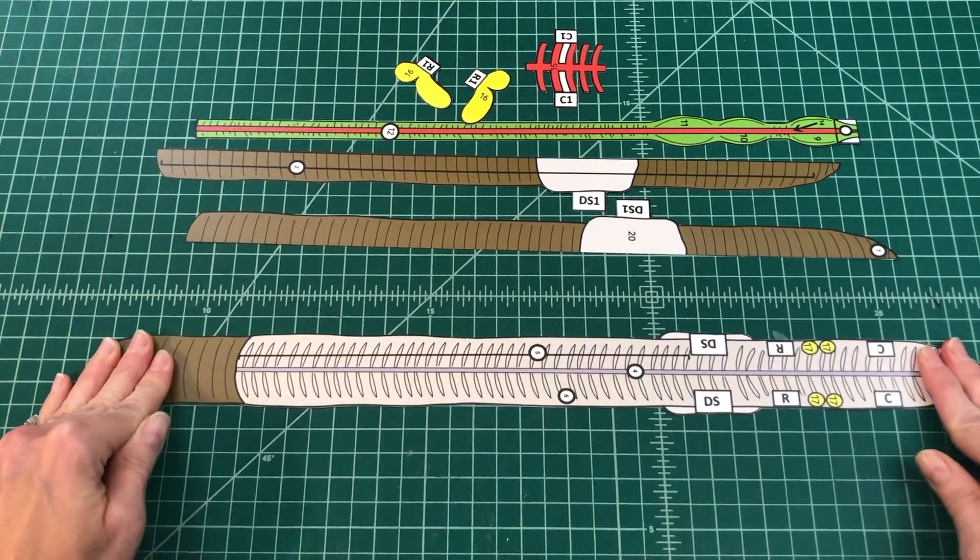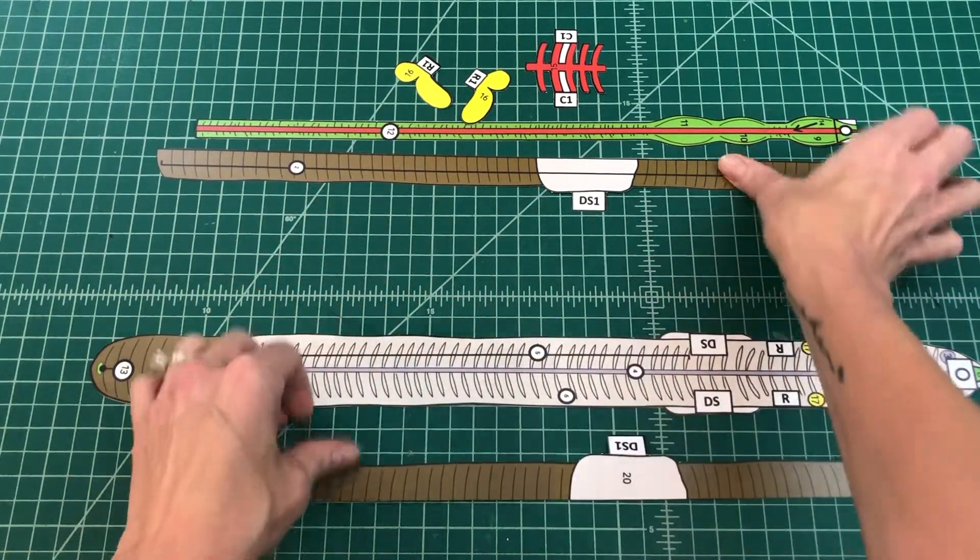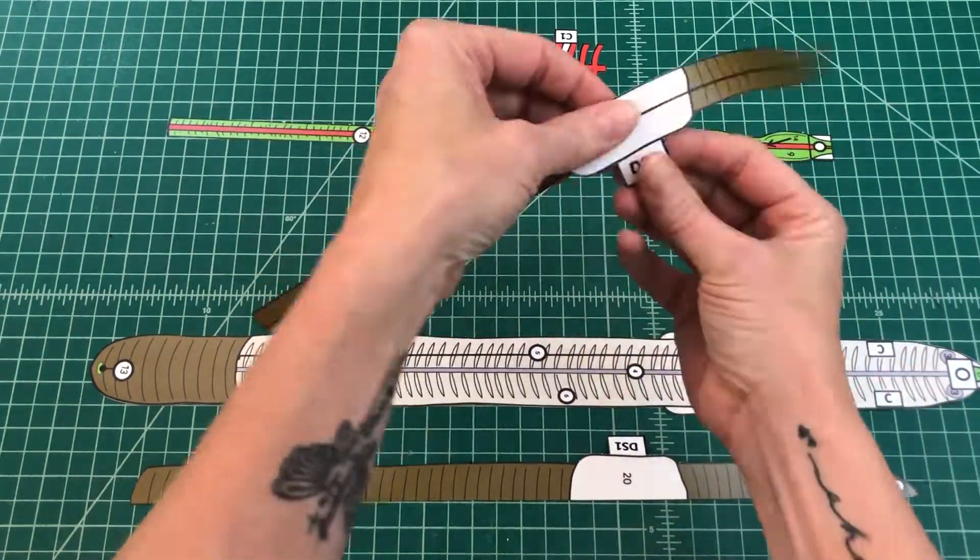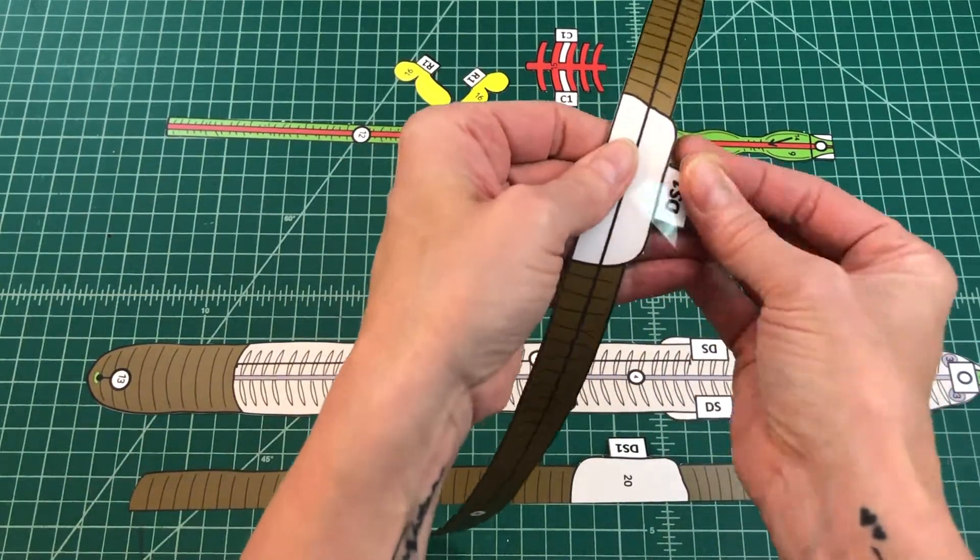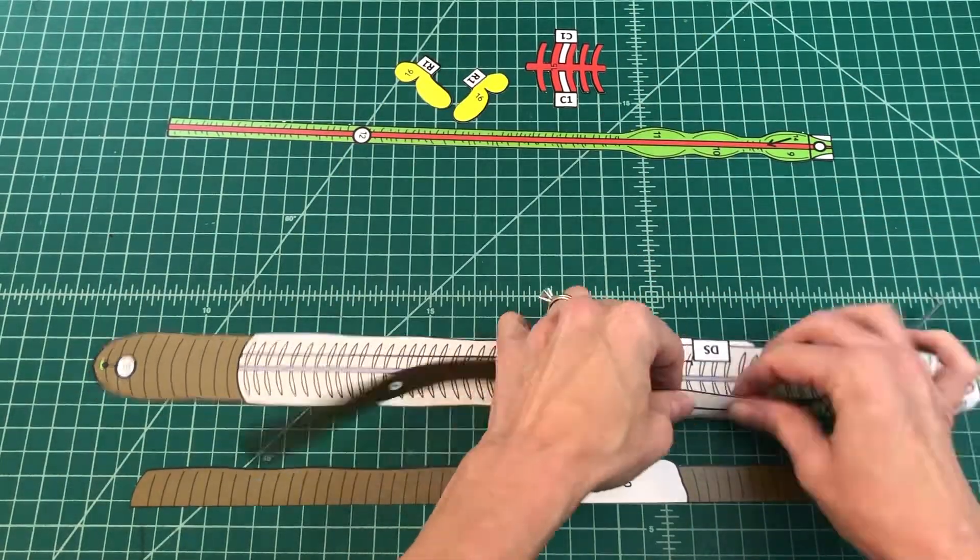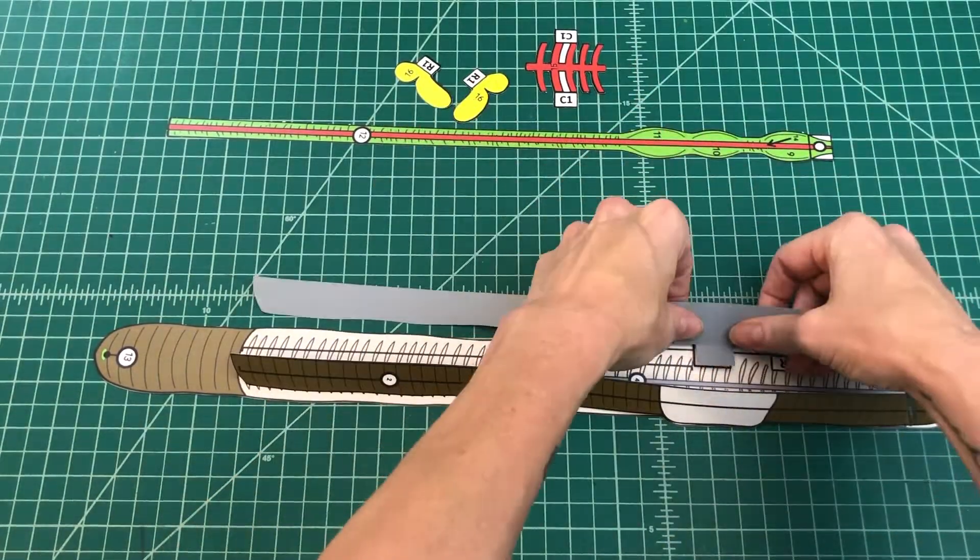Number two: Find the dorsal skin flaps. Cut along the solid black line down the middle to create two flaps. Apply glue to the top of the tab DS1 and fold it under.